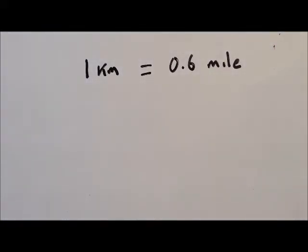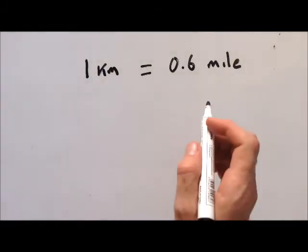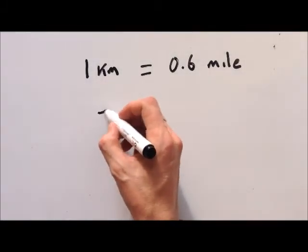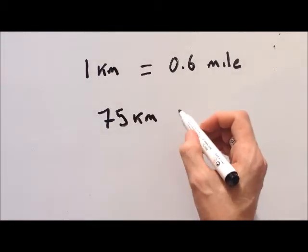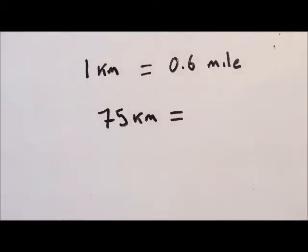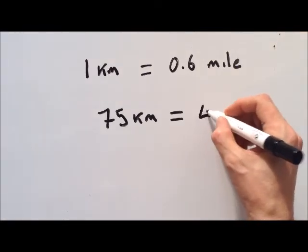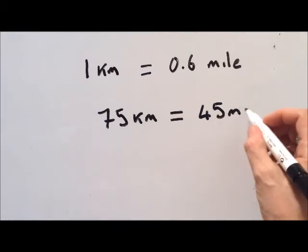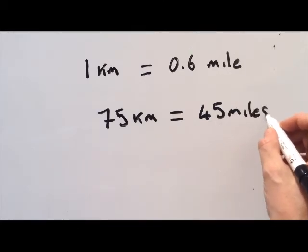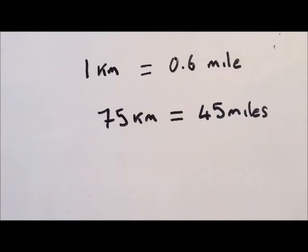Whenever we're presented with the opposite question, say we have 75 kilometers equals how many miles, we do 75 times 0.6, and we get nearly 45 miles. Okay, I've been Mr. Maths and I'll see you later.